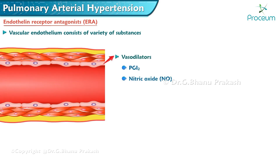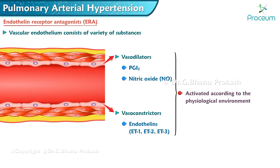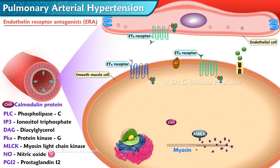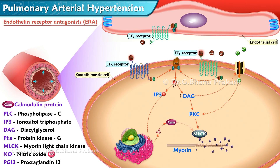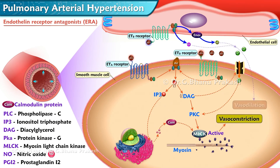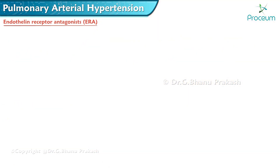The vascular endothelium produces both vasodilator substances — prostaglandin I2 and nitric oxide — and vasoconstrictors — endothelin 1, endothelin 2, and endothelin 3 — activated according to the physiological environment. Endothelin 1 exhibits vasoconstrictor and mitogenic effects in pulmonary vascular smooth muscle cells, binding to receptor isoforms endothelin A and endothelin B. Powerful vasoconstriction is mediated by activation of the endothelin A receptor, which plays a crucial role in pulmonary hypertension, while the endothelin B receptor mediates the release of nitric oxide and prostaglandin I2.